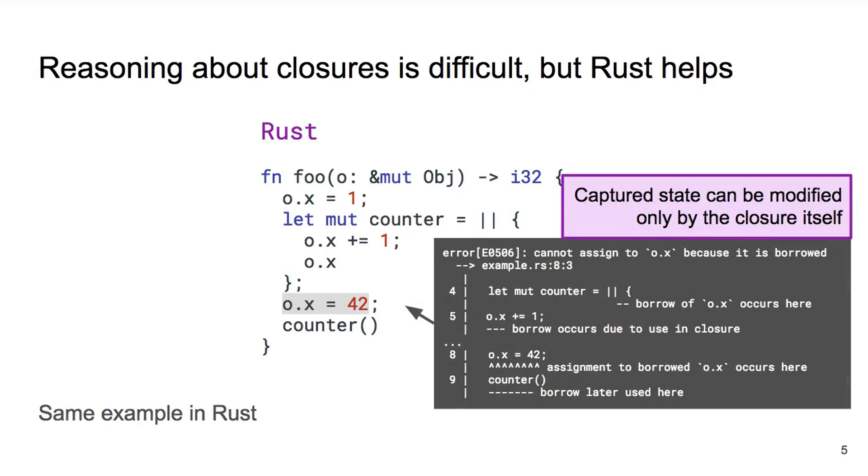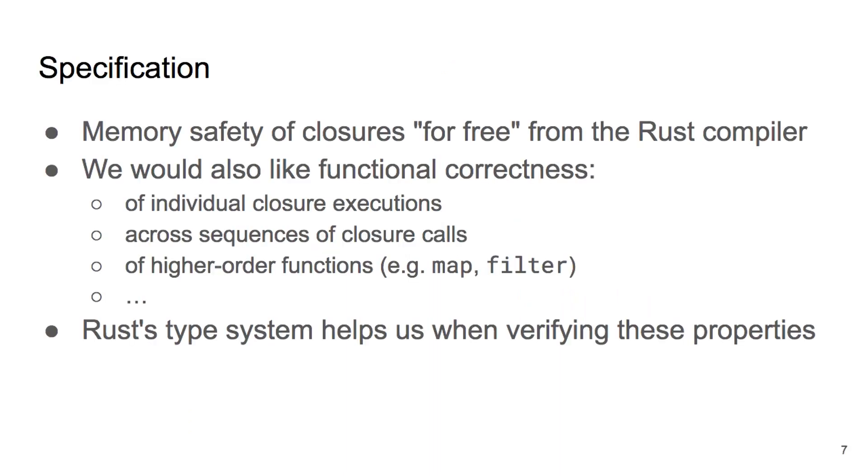This is one of the many consequences of Rust's ownership type system. Among other things, the type system also prevents data races, memory leaks, and aliasing issues. But of course, memory safety isn't everything. We get memory safety for free thanks to the ownership types, but there is much more to writing correct and verified programs.